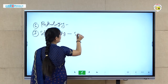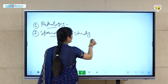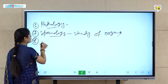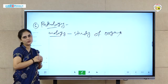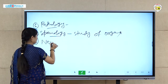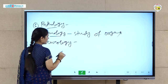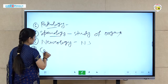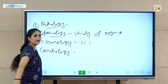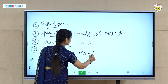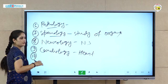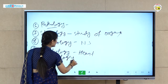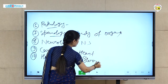The next branch is splanchnology, which is the study of organs. After that, neurology, which is the study of the nervous system. Then cardiology, which is the study of the heart. And finally, hematology, which is the study of blood.